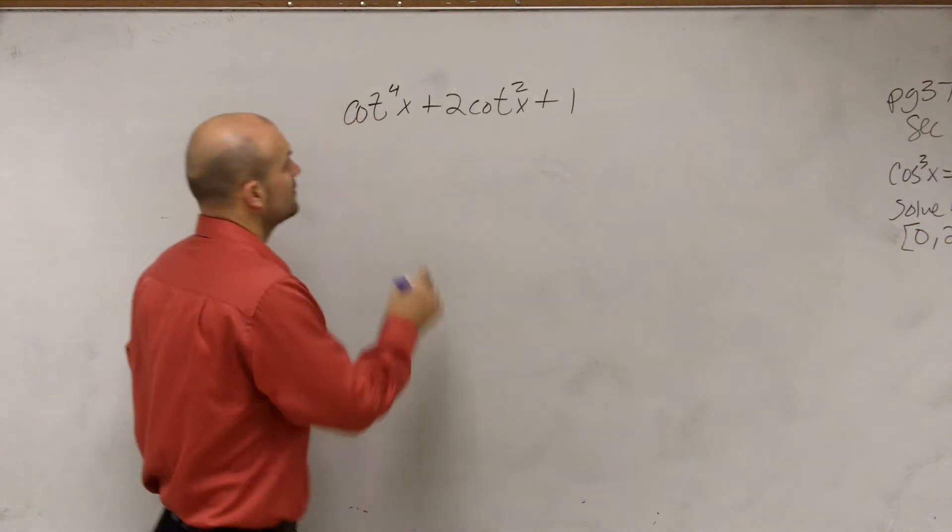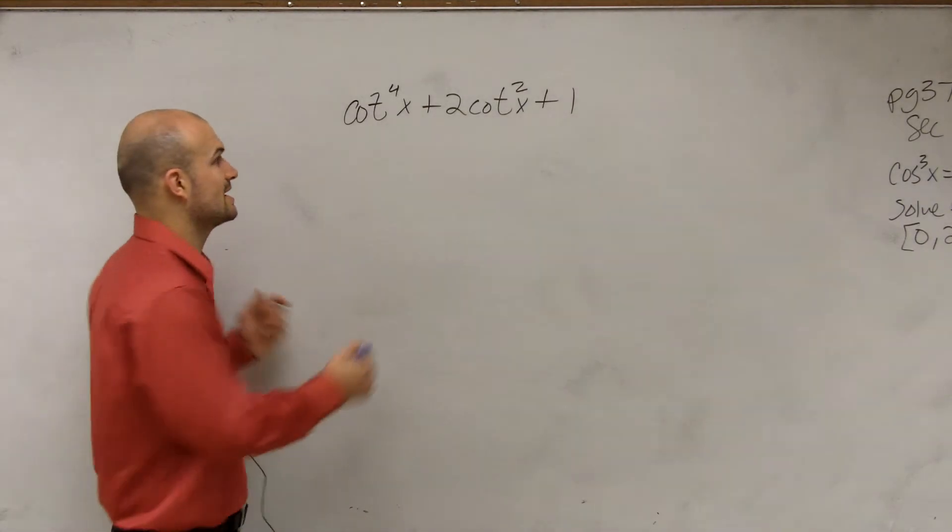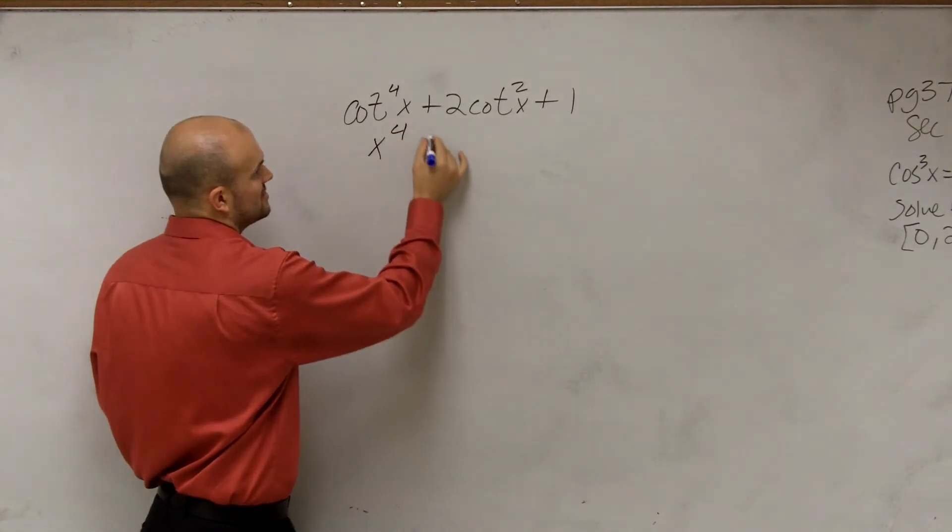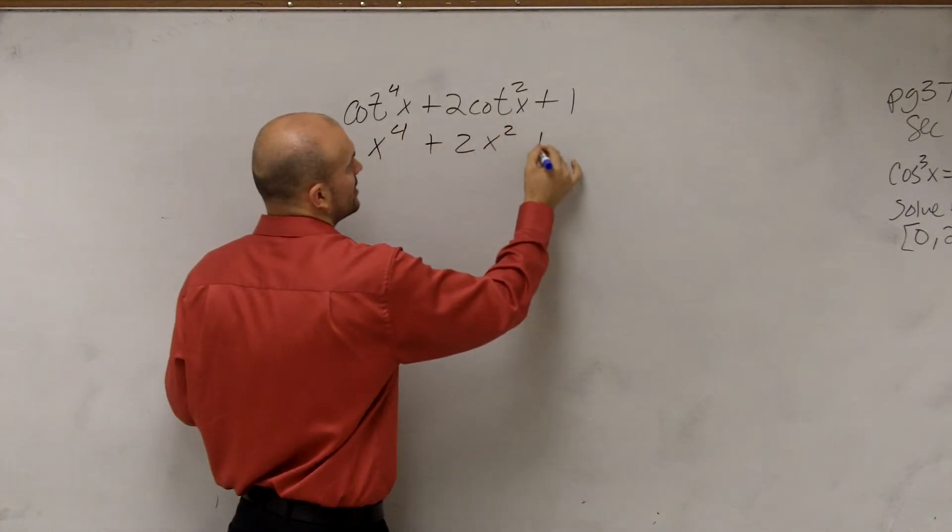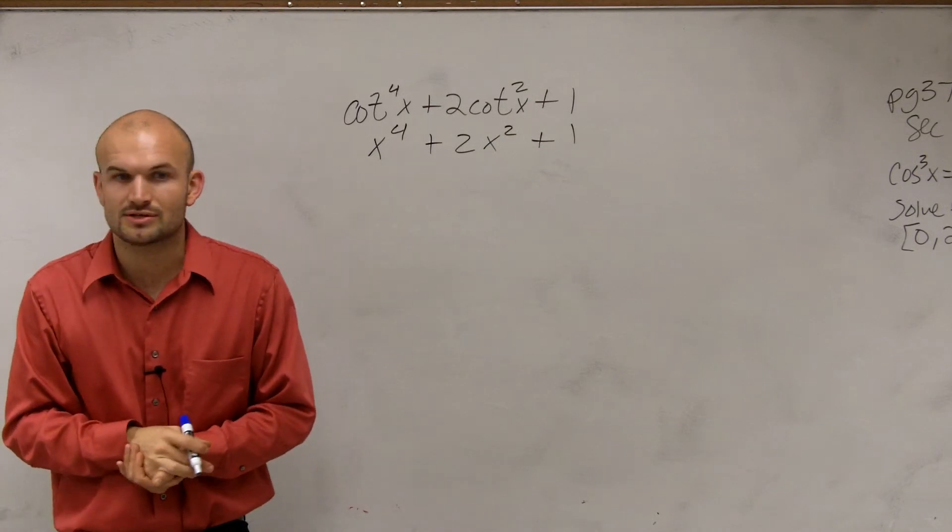When looking at this, let's kind of forget - I always like when I'm looking into factoring, I always like to forget about I even have cotangent. Let's just pretend I have x to the fourth plus 2x squared plus 1. And we say, how could we factor an expression like this?